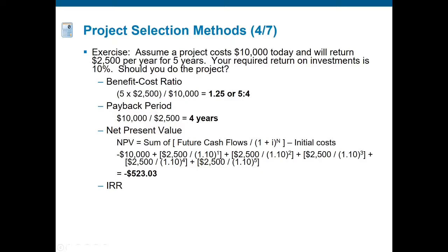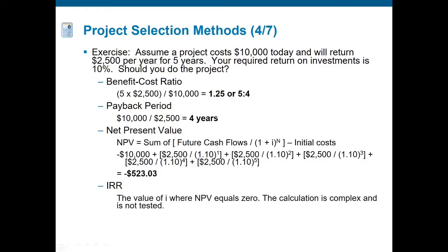For the internal rate of return: since we have a negative value for the net present value, we need to look at a reduced interest rate in order to bring our NPV back up to zero. In this case, the IRR will be 7.93%. The calculation is very complex, especially when you think about your exam where you have scrap paper, pencil, and a basic calculator.